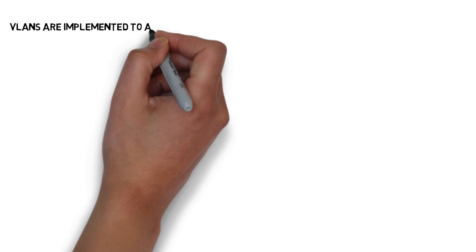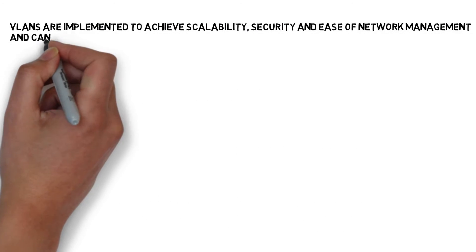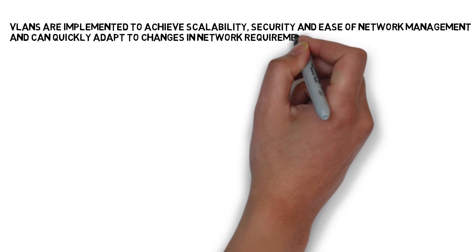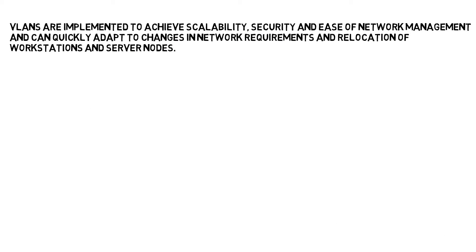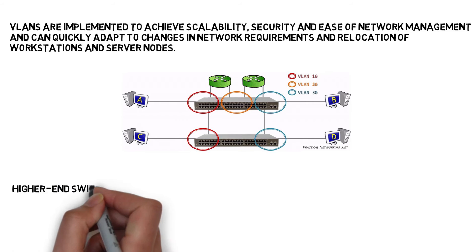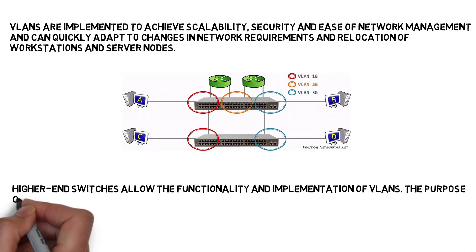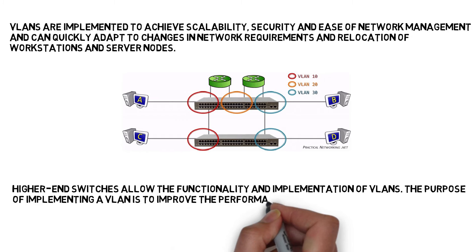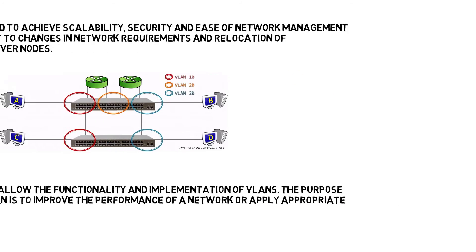VLANs are implemented to achieve scalability, security, and ease of network management, and can quickly adapt to changes in network requirements and relocation of workstations and server nodes. Higher-end switches allow the functionality and implementation of VLANs. The purpose of implementing a VLAN is to improve the performance of a network or apply appropriate security features.